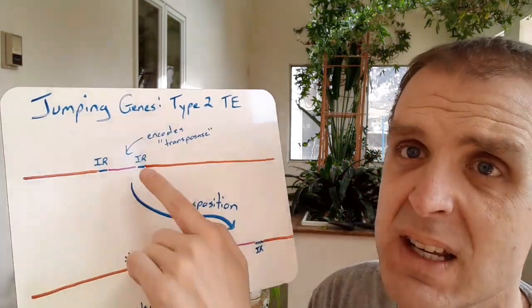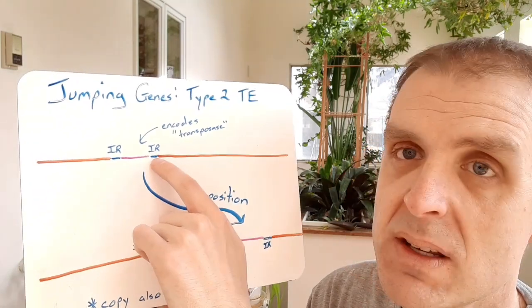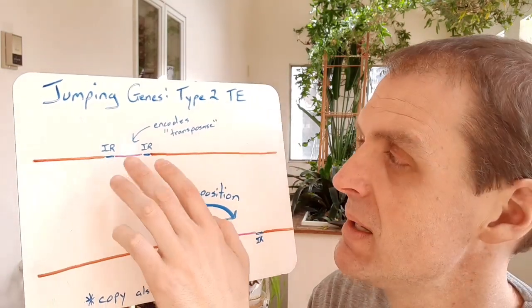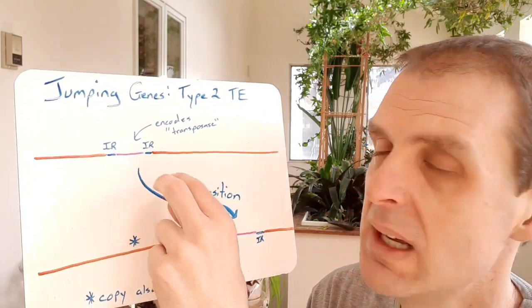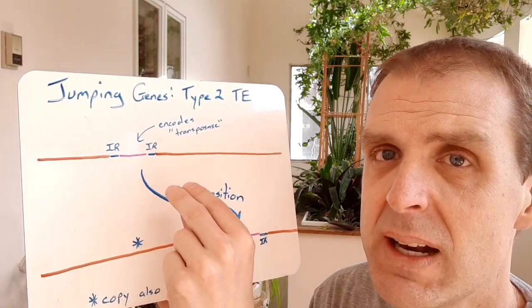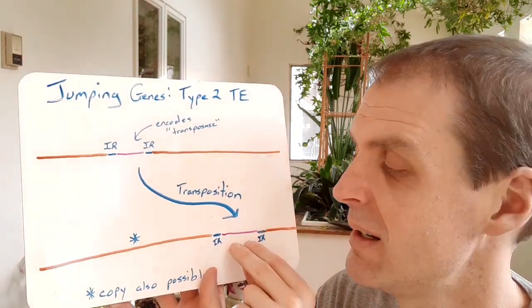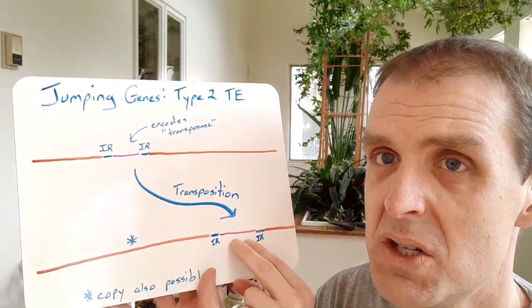What happens is if that transposase gets expressed as a protein, it can bind onto these inverted repeat sections and it can cut that section of DNA out of the genome and then also integrate it into another position in the genome.